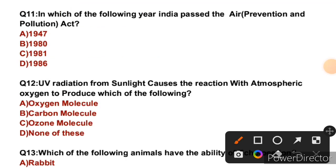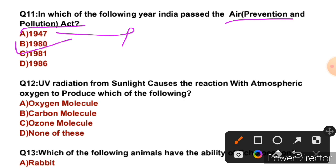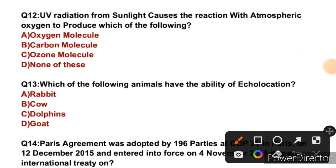Question 11: In which year did India pass the Air Prevention and Pollution Act? This question was also recently asked by JKSB in the sub-inspector exam. The Ministry of Environment, Forestry and Climate Change was formed in 1947. The Forest Conservation Act was passed in 1980, and the Air Prevention and Pollution Act was passed in 1981. So the right answer is C. And the Environment Protection Act was passed in 1986.